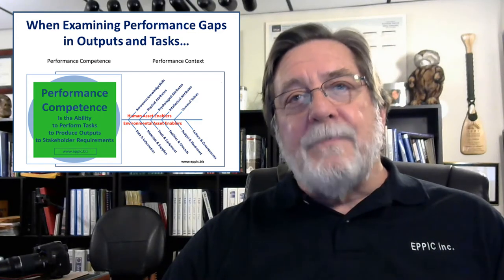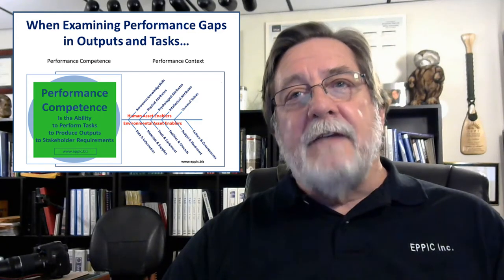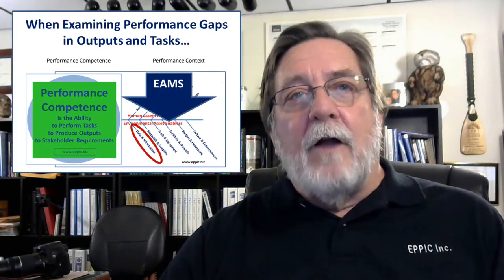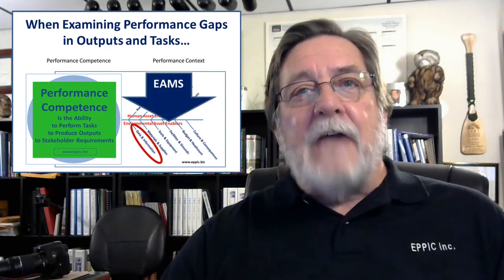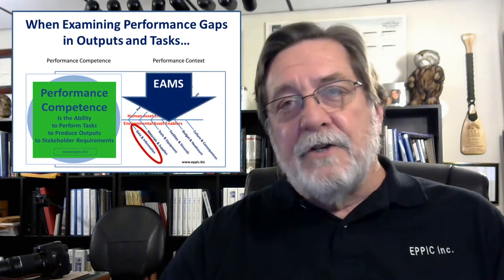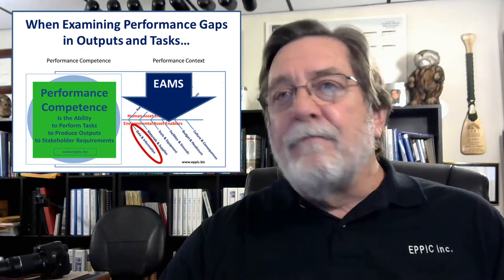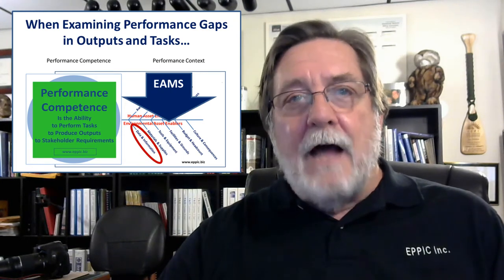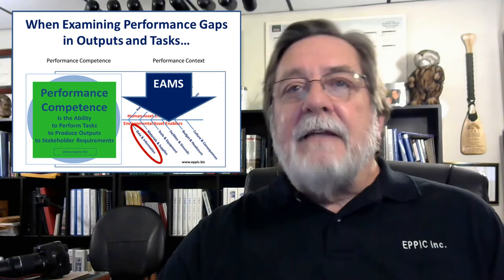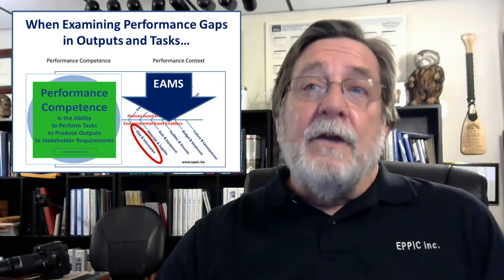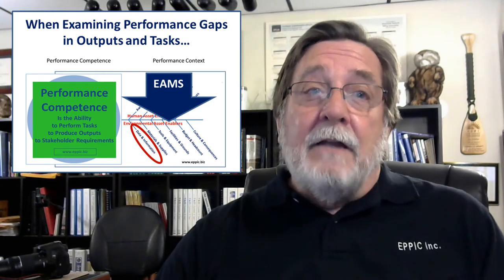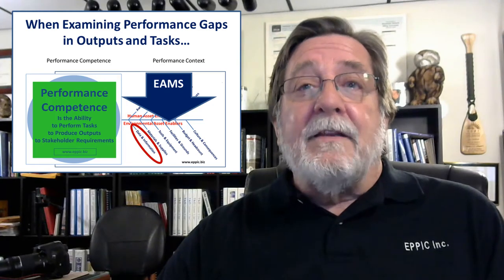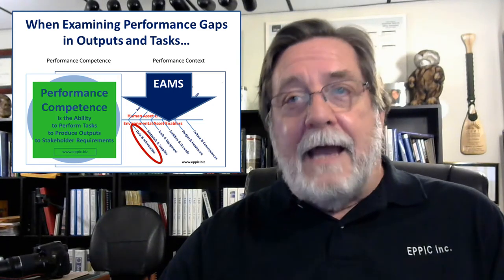When examining performance gaps in outputs and tasks, your second pass should be to look at the environmental enablers, such as adequate and timely data and information. Performance gaps are most often not due to knowledge and skill deficits. Data and information systems will need to be redesigned to meet the stakeholder requirements for outputs and the tasks, and then resourced adequately.